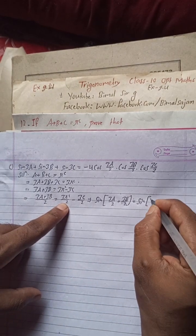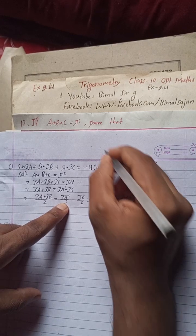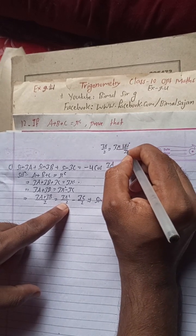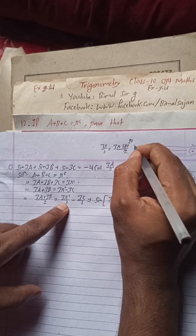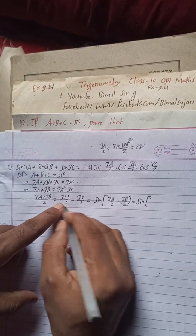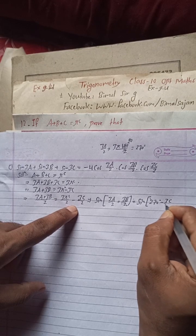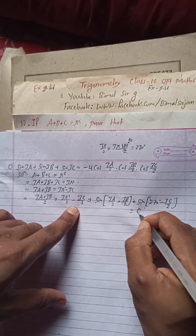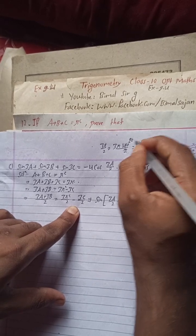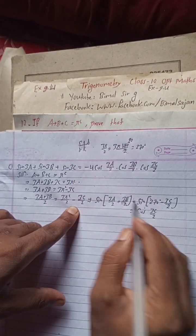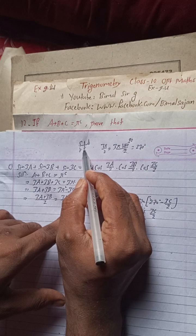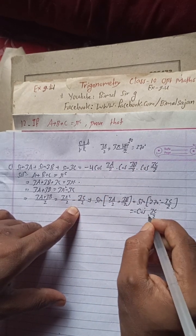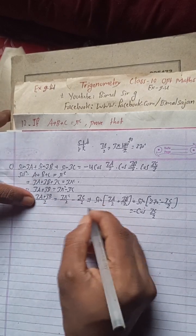Now 3π/2 means 3 × 180° / 2 = 270°. So the right side is sin(270° - 3c/2). Using the CAST rules, 270° places us in the third quadrant. In the third quadrant only tan and cot are positive, so sin(270° - 3c/2) = -cos(3c/2).